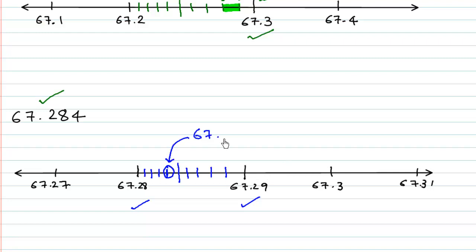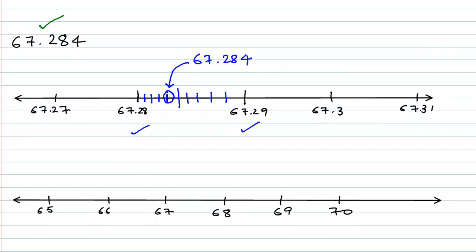So in order to represent 67.284 on this number line where we only have whole numbers like 65, 66, 67, 68, 69, it would be very very difficult. Why? Because first we will represent 67.2 and that would be possible by dividing this segment in 10 equal parts. So 1, 2, 3, 4, 5, 6, 7, 8, 9 and 10.